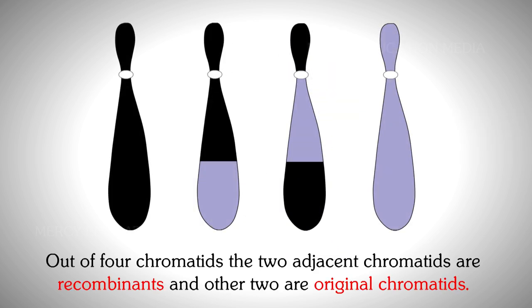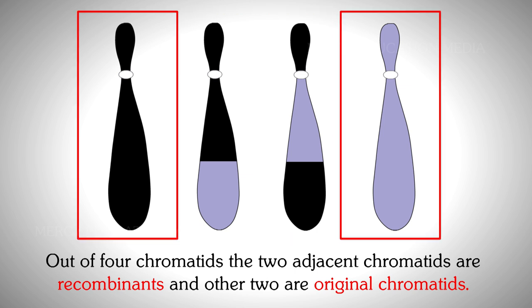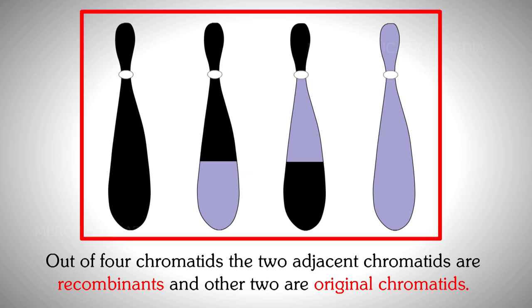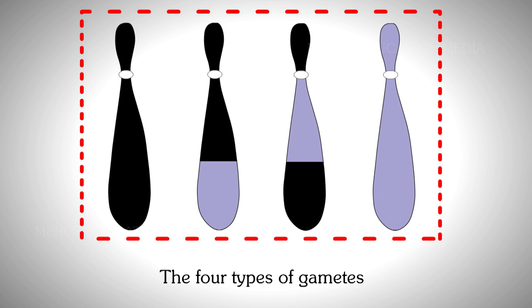Hence, out of four chromatids, the two adjacent chromatids are recombinants and the other two are original chromatids. Thus, four types of gametes are obtained.